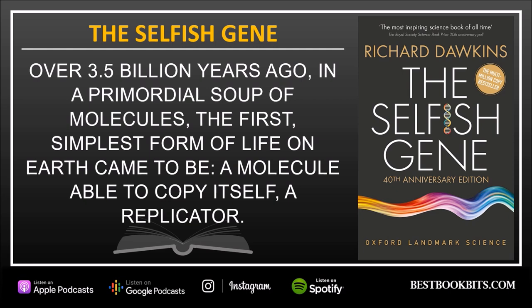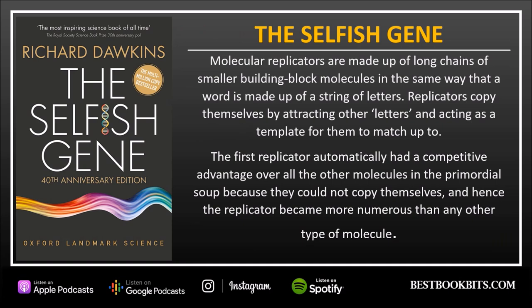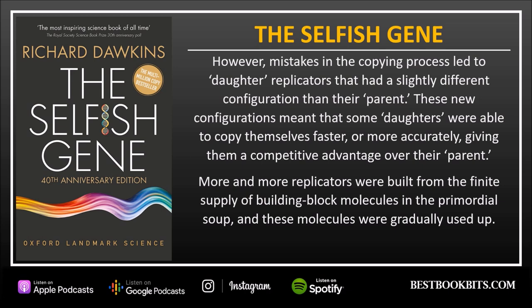Over 3.5 billion years ago, in a primordial soup of molecules, the first, simplest form of life on Earth came to be: a molecule able to copy itself — a replicator. Molecular replicators are made up of long chains of smaller building block molecules, in the same way that a word is made up of a string of letters. Replicators copied themselves by attracting other letters and acting as a template for them to match up to. The first replicator automatically had a competitive advantage over all the other molecules in the primordial soup because they could not copy themselves, and hence the replicator became more numerous than any other type of molecule.